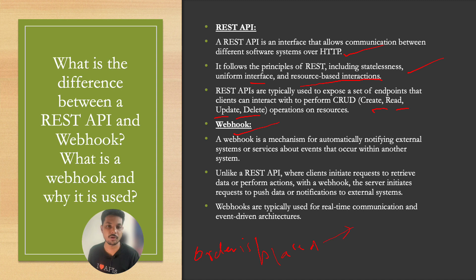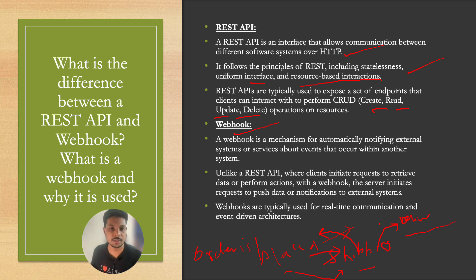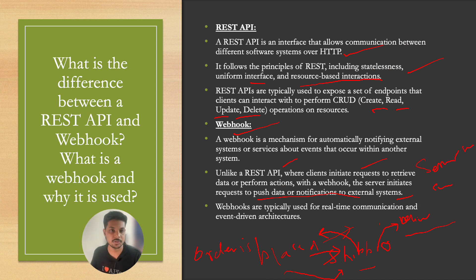In contrast, a webhook is used for real-time communication. It is mostly used in event-driven architectures where you want to notify an external system when something occurs. For example, on an e-commerce website, whenever an order is placed, you want to notify a shipping service immediately — rather than the shipping service polling for order placements, you push a notification as soon as the order is placed. Unlike REST APIs where clients initiate requests, with webhooks the server initiates requests to push data to external systems. Webhooks are basically used in server-to-server communication.